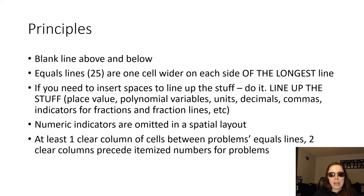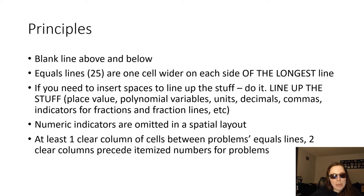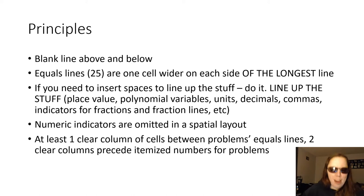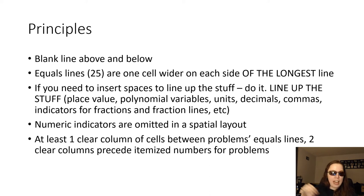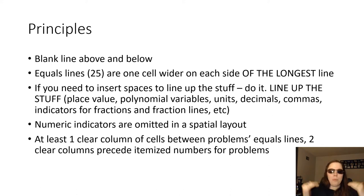Some common principles to think about when doing spatial arrangement: in Nemeth Code, when there's a spatial arrangement of a math problem, we always put one blank line above the beginning of the spatial arrangement. So we'll have a direction that might say 'solve these problems' or 'add these numbers,' and then at the end of that direction we'll start our Nemeth mode with our switch indicator. Then we put a blank line above the spatial arrangement. All spatial arrangement problems — we might have several on the same line or multiple lines — will always have a blank line above the section and a blank line below the problem and the section.